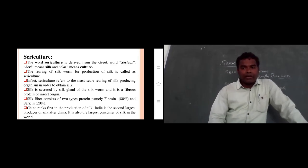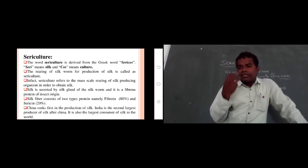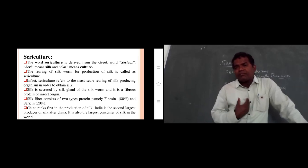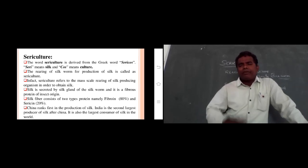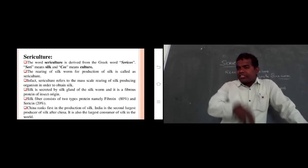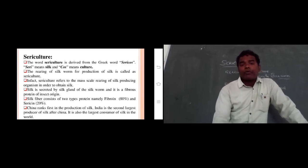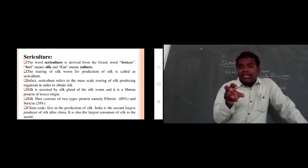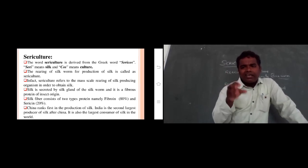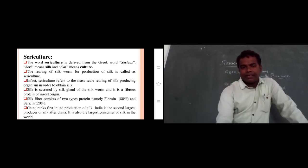The silk fiber consists of two types of proteins. Eighty percent is fibroin protein, and twenty percent is sericin protein. The thread is made up of fibroin protein — it is what makes the silk thread strong. Sericin protein is responsible for the shining quality of silk. So the silk thread contains 80% fibroin and 20% sericin.